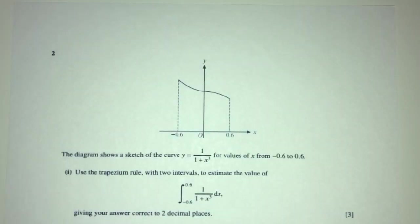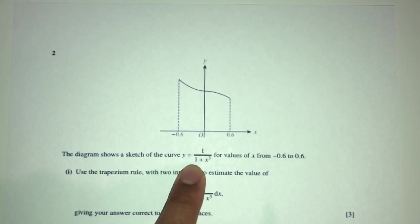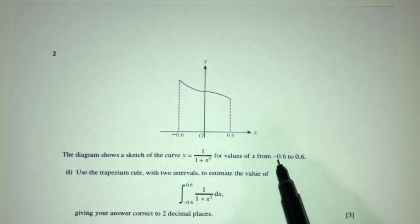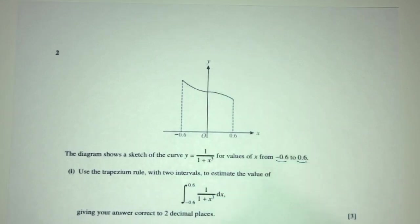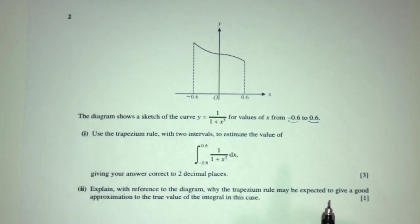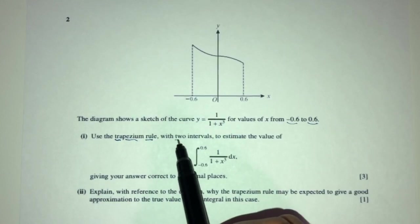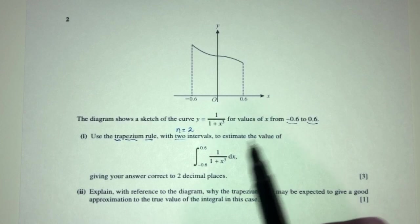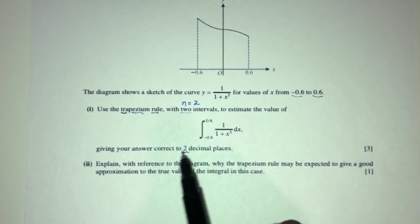Let's move on to question number 2. The diagram shows the curve y = 1/(1 + x³) for values of x between a given range. For part 1, we have to use the trapezium rule with n = 2 intervals to estimate the value of the integral, giving the answer correct to 2 decimal places.